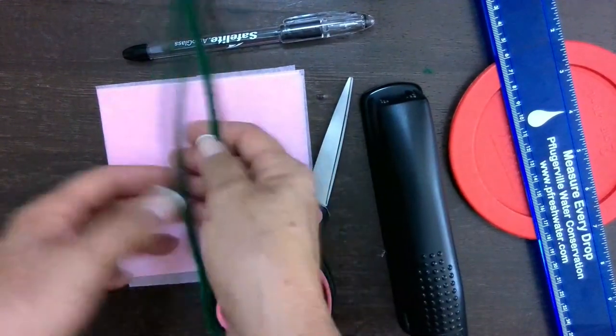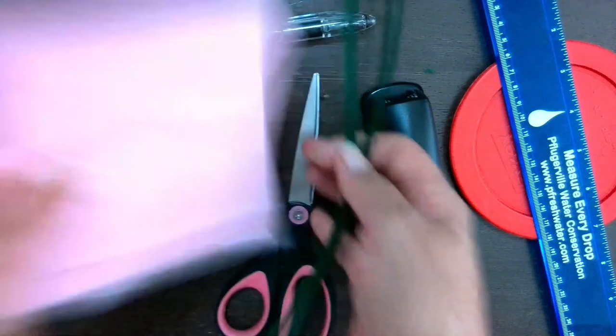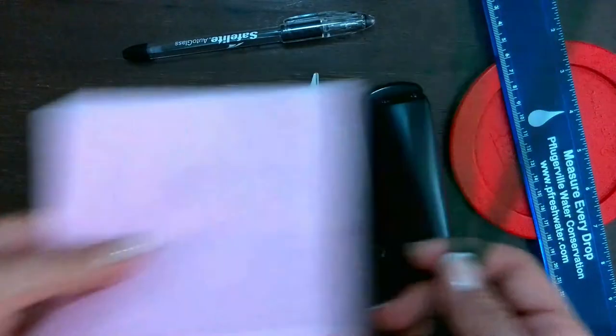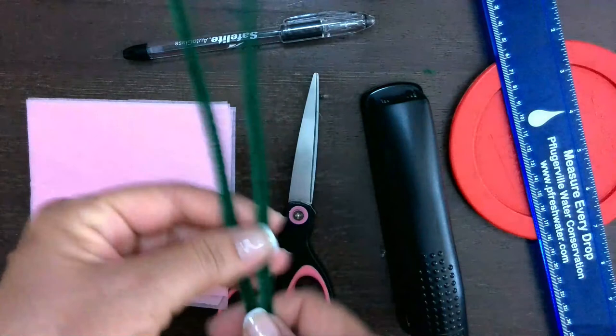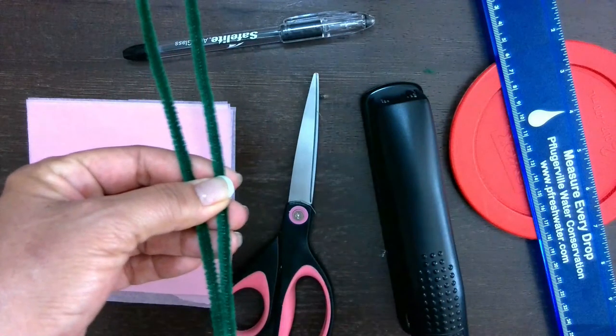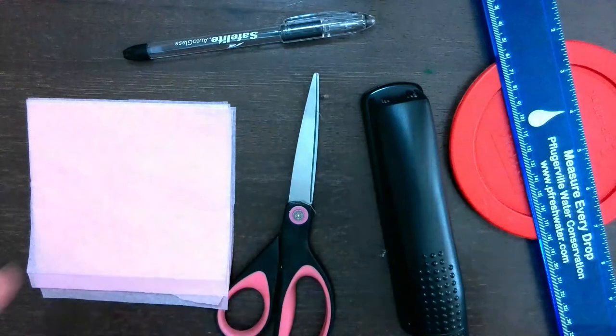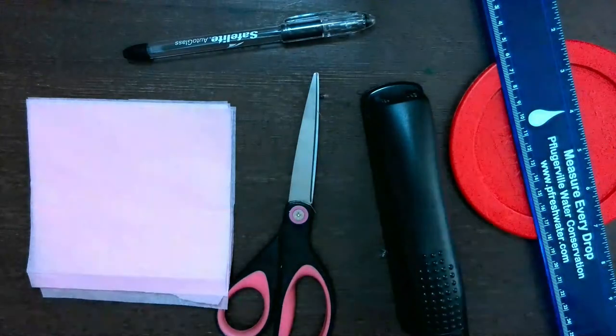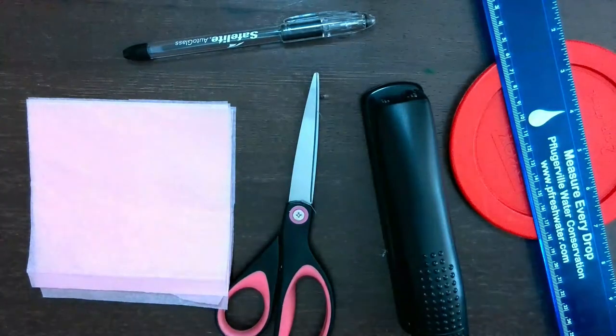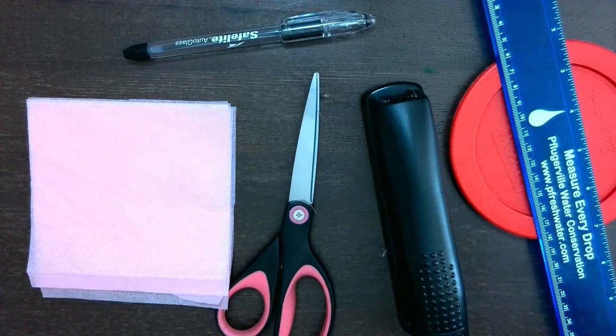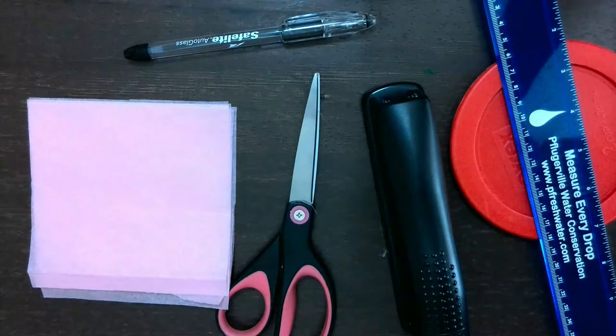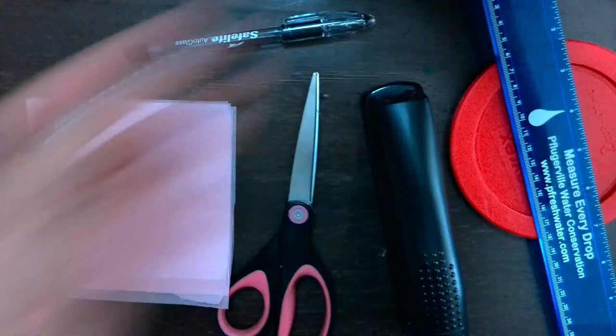The only materials you pretty much need are some tissue paper and pipe cleaners for the stems. You will need also a little bit of tape. I just grabbed my tape. It's right here.